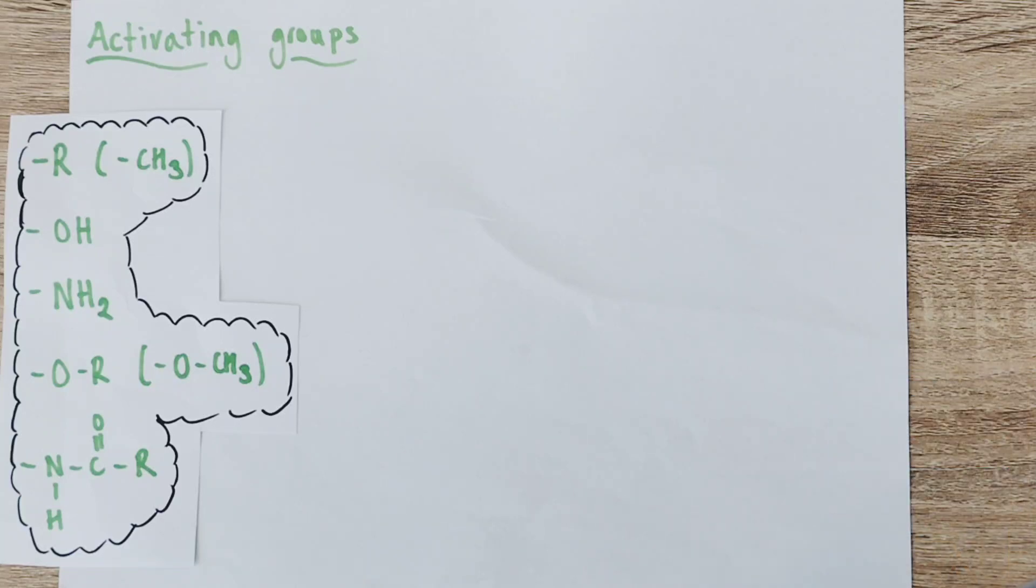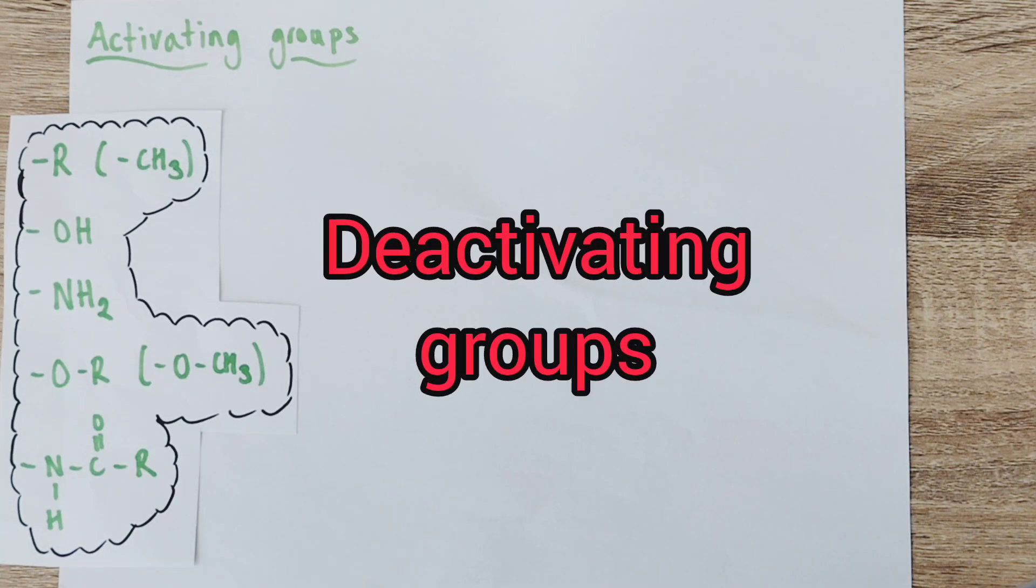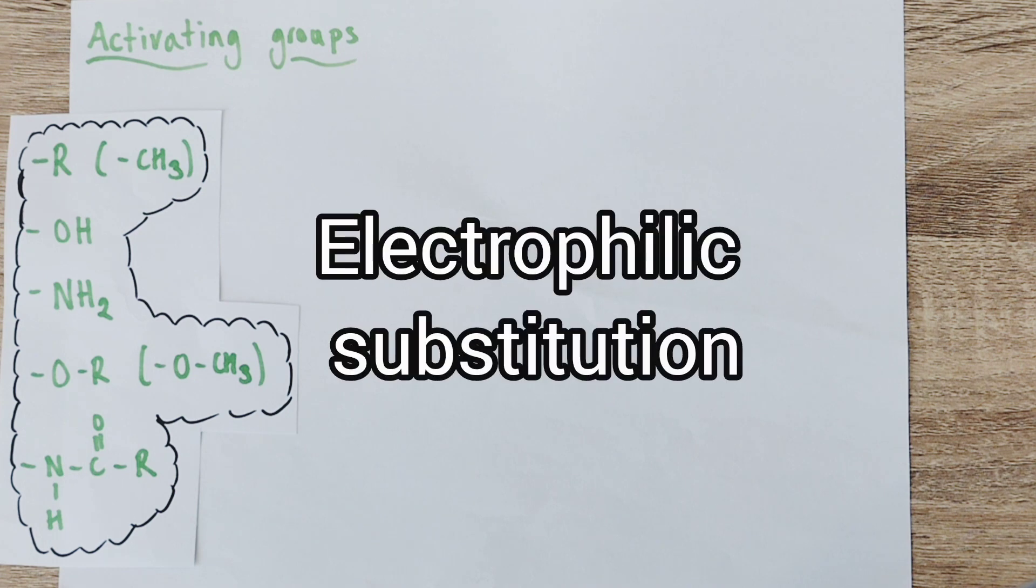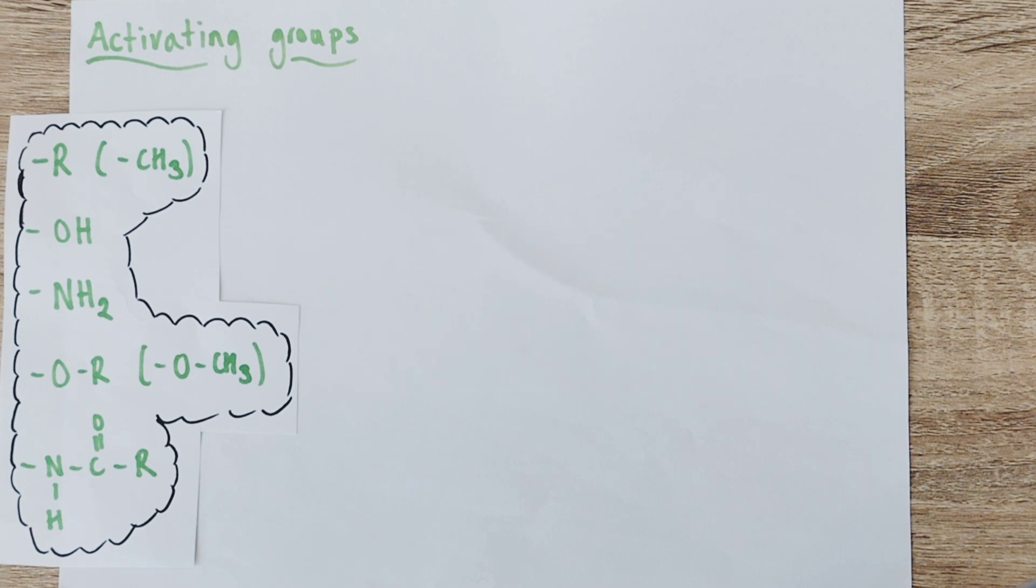Hi there, welcome to this Alchemist Chemistry A-level video looking at activating groups and deactivating groups in regards to electrophilic substitution reactions involving aromatic compounds, sometimes known as EAS reactions.